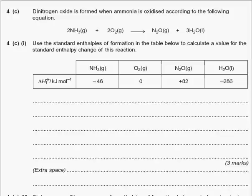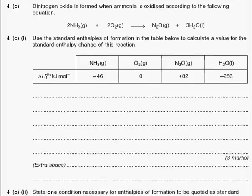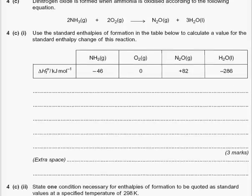Okay, let's look at C. Dinitrogen oxide is formed when ammonia is oxidized according to the following equation: 2NH3 plus 2O2 forms N2O and 3H2O. Use the standard enthalpy of formation in the table below to calculate a value for the standard enthalpy change.